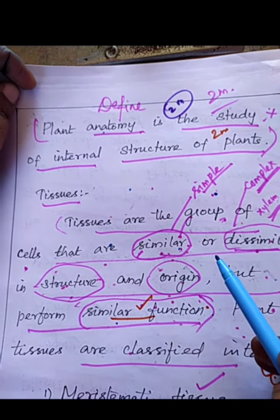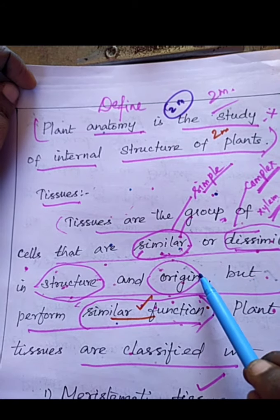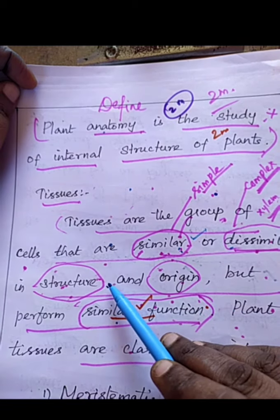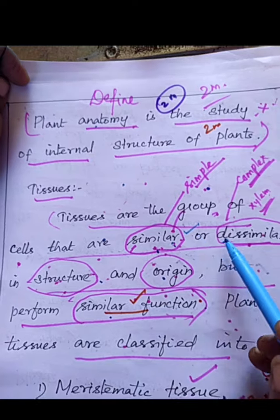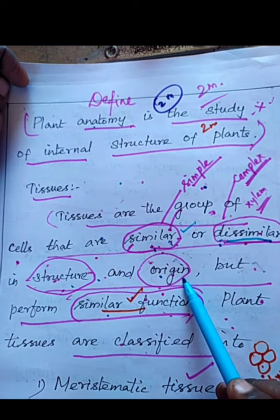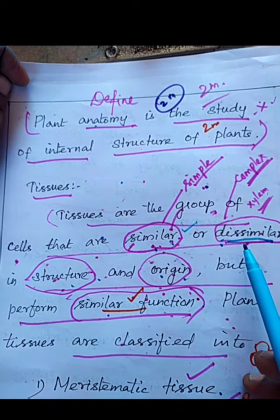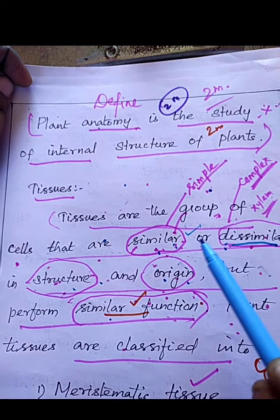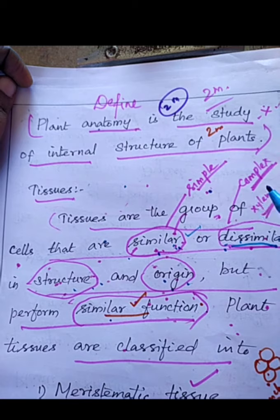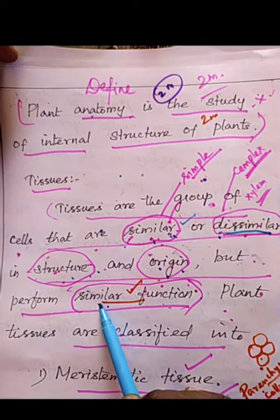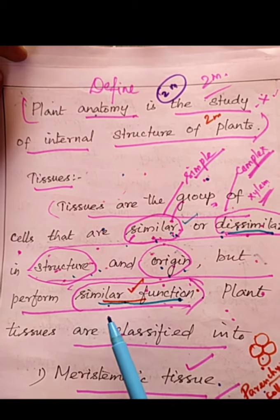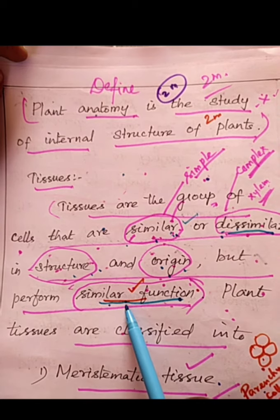Tissues are the group of cells that are similar or dissimilar in structure and origin. In simple tissue, all the cells are similar in structure and also similar in origin. But in complex tissue, the cells are dissimilar in size, structure, and origin — they originate from different types of cells. All the cells group together and perform a particular function — that is called tissue.